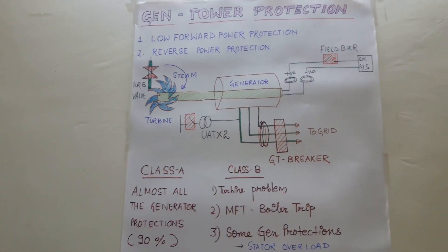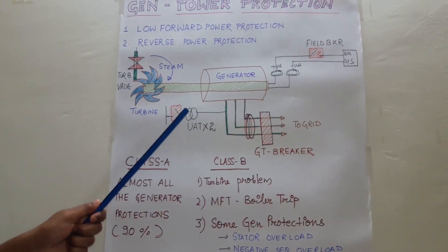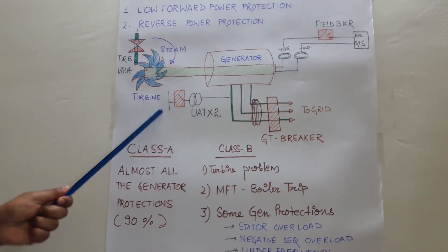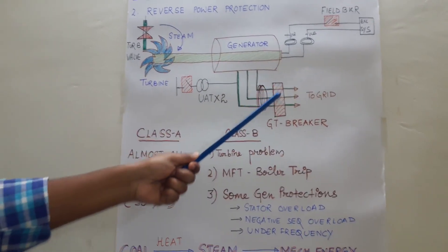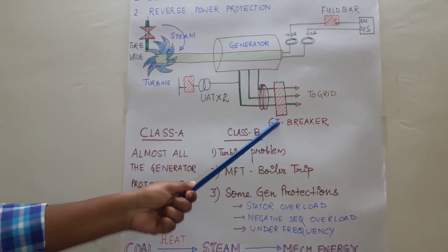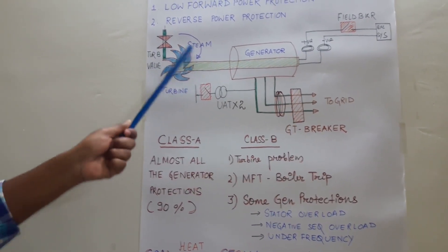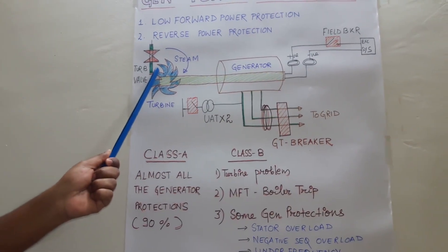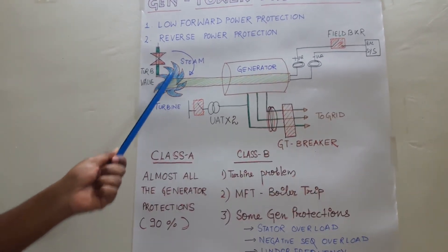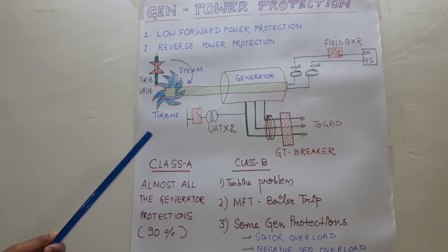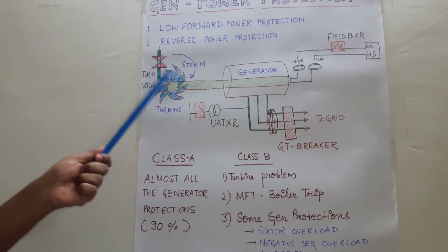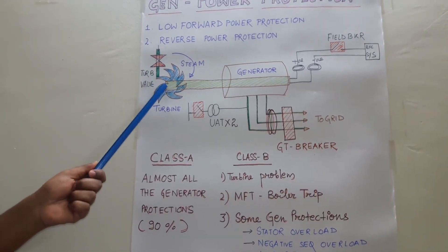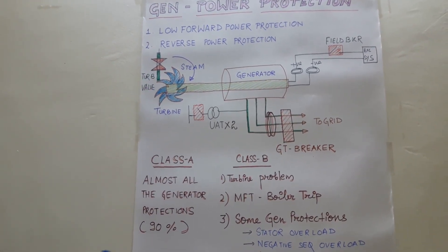What is the drawback of this class A tripping? The main drawback is that when the GT breaker is tripped, there is trapped steam inside the turbine. This will lead to the over-speed of the rotor, because this excess mechanical energy will be converted into kinetic energy and the rotor will over-speed, which is not desirable.